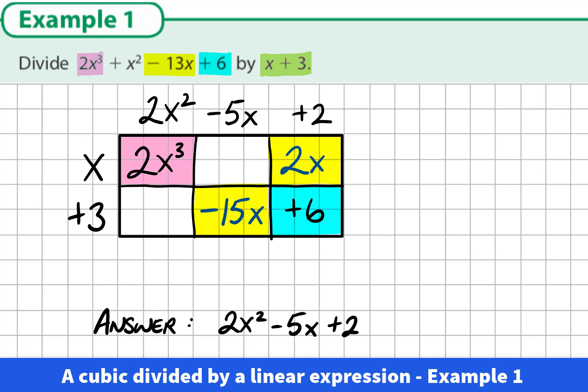We can check our answer to see that it's correct. If we finish off the multiplication here in these last two boxes, we should see that they add up to the total of the x squareds which is plus 1x squared. If we multiply 2x squared by 3 we get 6x squared, and x by negative 5x we get negative 5x squared. If we add these two expressions, 6x squared minus 5x squared, we get 1x squared. So we know that we're correct.